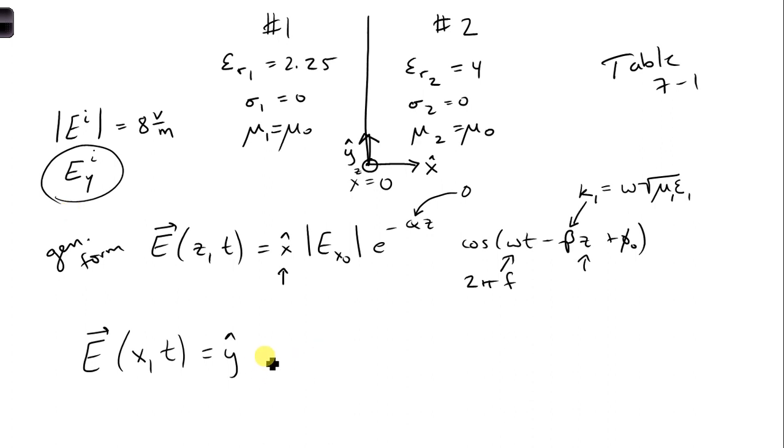So I'm going to put a y hat there. The amplitude of the incident wave is 8. I'll have 8. This term goes to 0. It just goes to 1 because alpha goes to 0. So I'm going to ignore that.